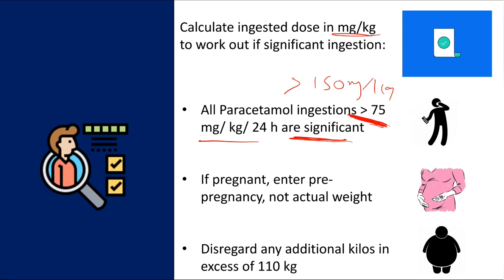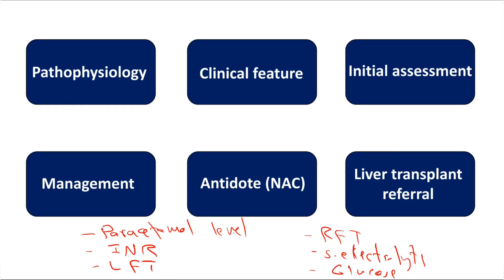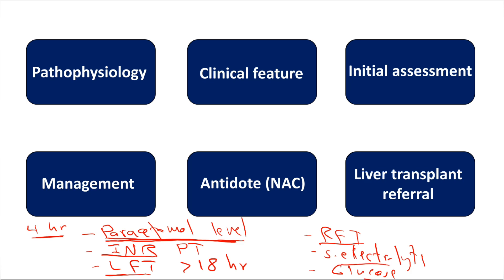If pregnant, use the pre-pregnancy weight — for example, if someone is 60 kg pre-pregnancy and 70 kg during pregnancy, use 60 kg. Disregard any additional kilos in excess of 110 kg for obese patients. Investigations to send include: paracetamol level (after four hours from ingestion, as it won't be elevated until then), INR and PT for coagulopathy, liver function tests (ALT and AST may rise above 10,000, especially on day two or three, but may start rising after 18 hours), renal function tests, serum electrolytes, and glucose.